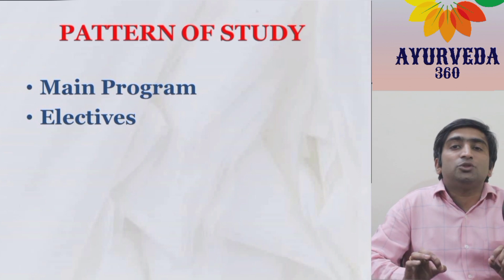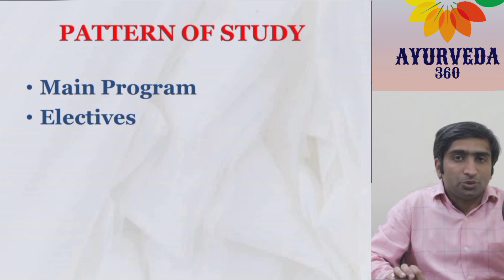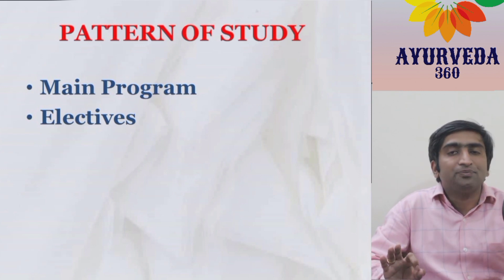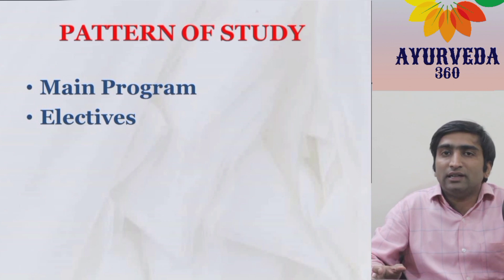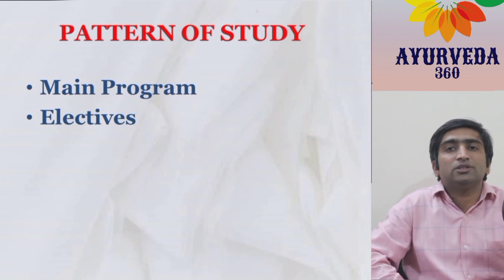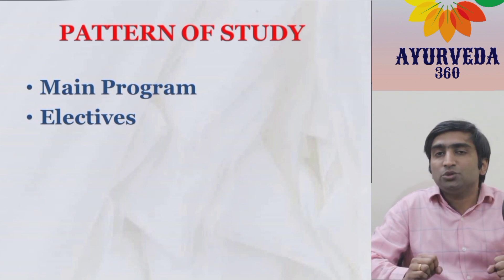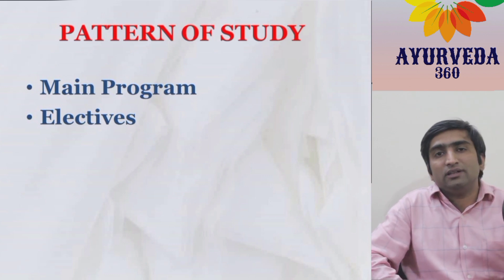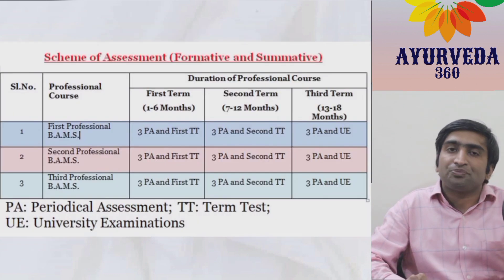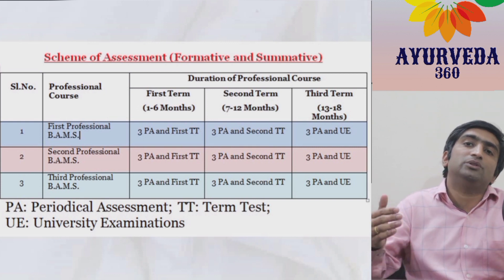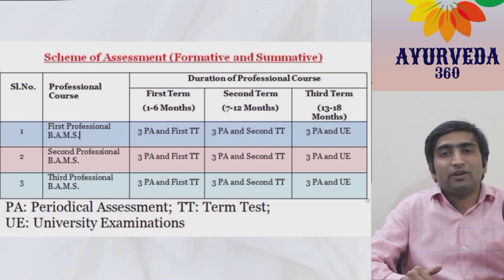Electives are chosen topics selected by the student themselves — a minimum of three per professional course is mandatory. Depending on the student's interest and an interdisciplinary approach, the student can choose these, and they are mainly online-related courses. Based on these two patterns, the student will study BAMS — four and a half years plus one year of compulsory internship — during which the student needs to be assessed regularly.